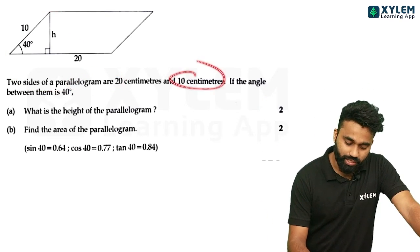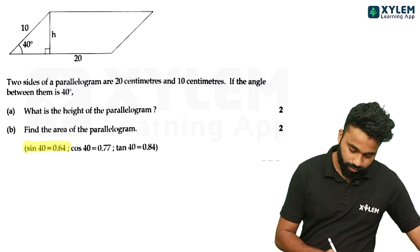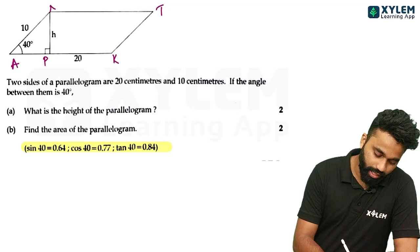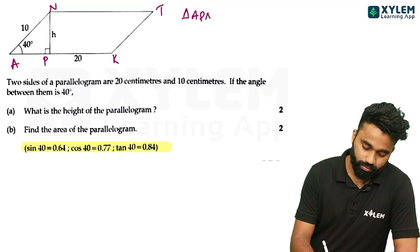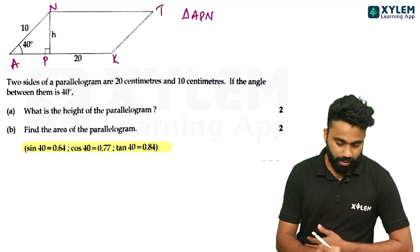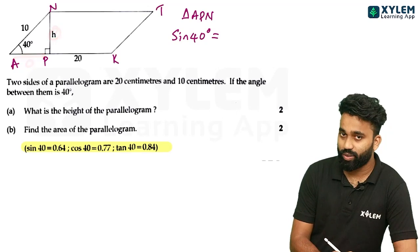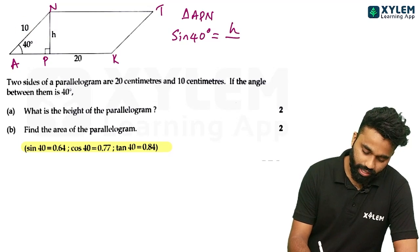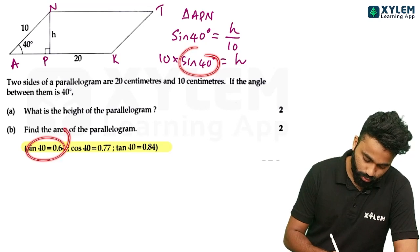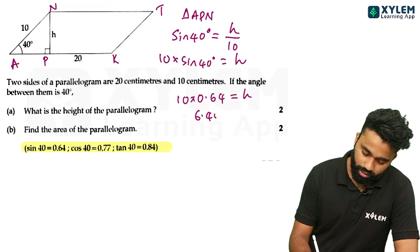Two sides of a parallelogram are 20 cm and 10 cm. What is the height of the parallelogram? We have to look at the height of the parallelogram. We have to write sin θ equal to opposite by hypotenuse. So h is 10 × sin θ, which equals h equal to r·4.